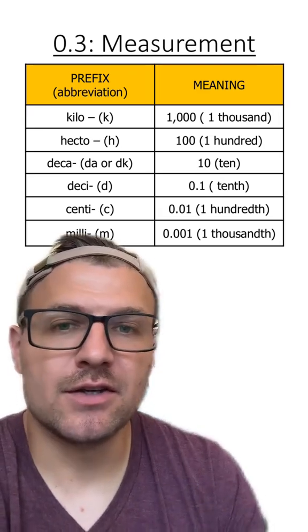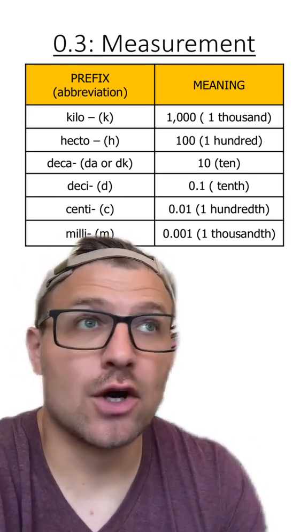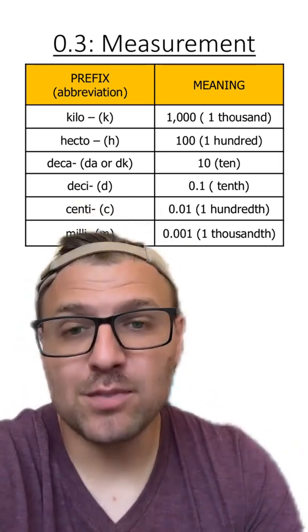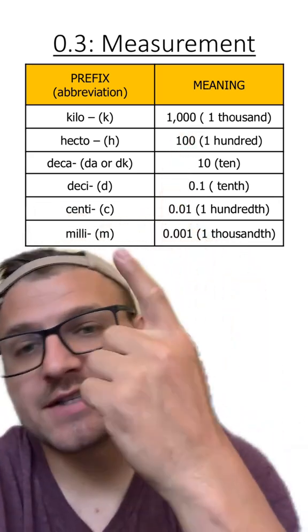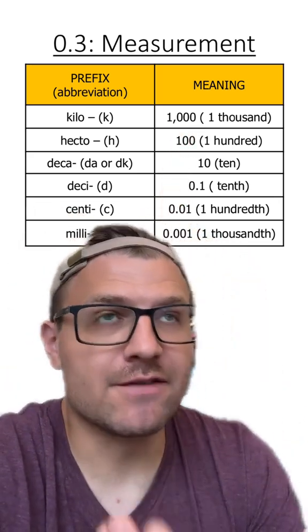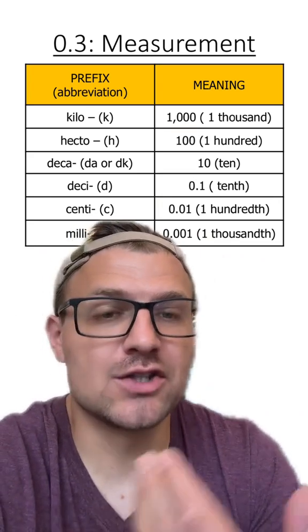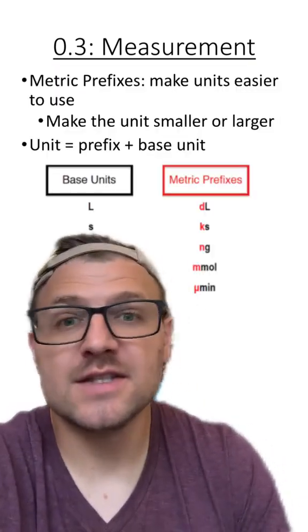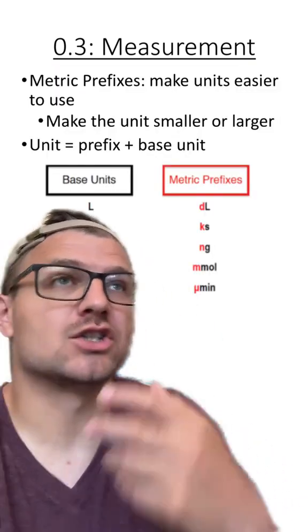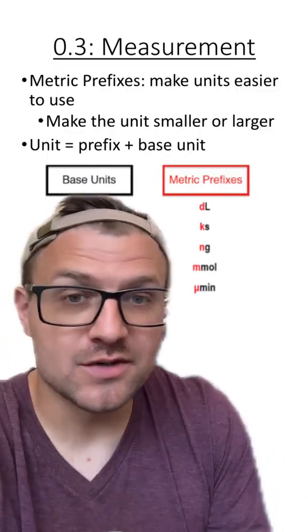Now when we use these different units, we also have prefixes that go before the unit. And these prefixes have certain meanings like kilo meaning 1000. So whenever we see these prefixes before the unit, we have to understand that that prefix is going to change the meaning of the unit, or at least what we're measuring. So when you see these units, you might see a prefix before it to change the type of measurement that we're using.